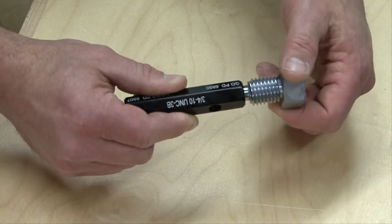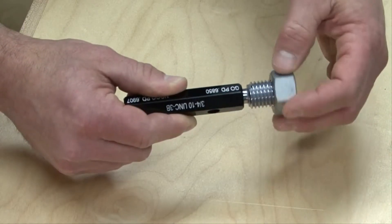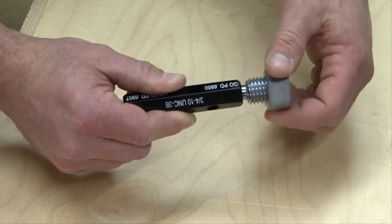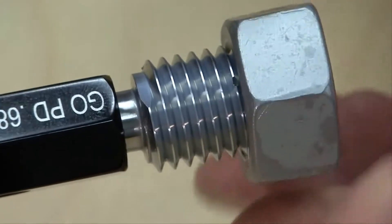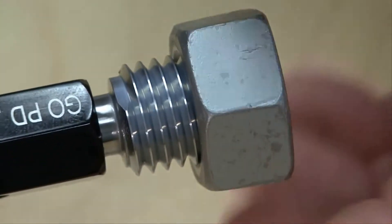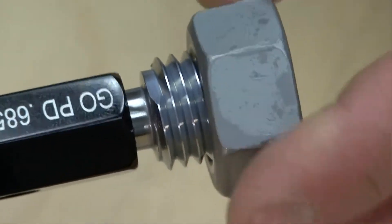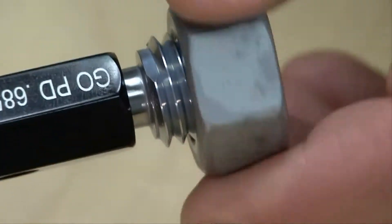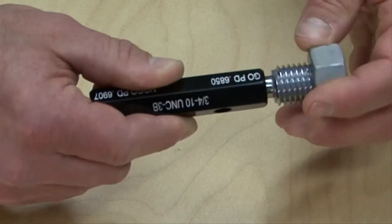All gauging whenever possible should be done over an inspection table in the event that the gauge is accidentally dropped. If a gauge is dropped, it should be immediately re-inspected for damage. The GO thread plug gauge should engage the internal threaded part with very little force used. The engagement should be smooth.